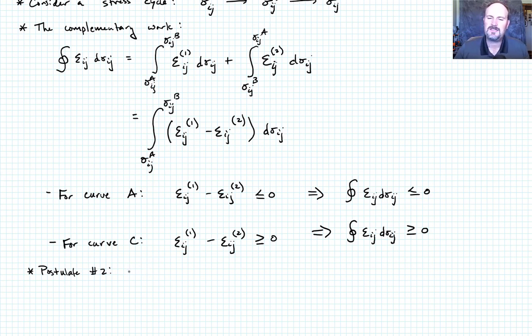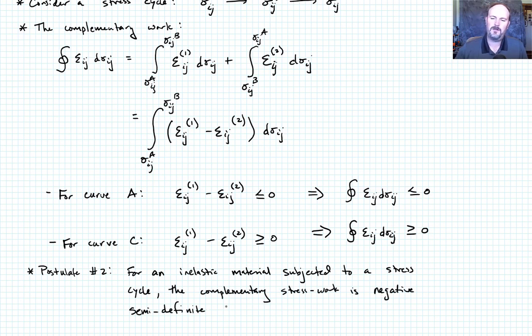So postulate number two: for an inelastic material, in this case it's plastic, subjected to a stress cycle, the complementary stress work is negative semi-definite. Remember that's less than or equal to zero, that's what that means. So the equation that we care about then is the integral along the path of epsilon_ij d sigma_ij is going to be less than or equal to zero.